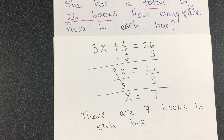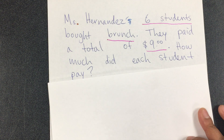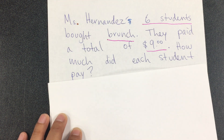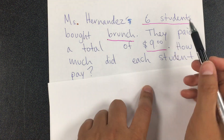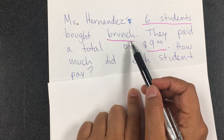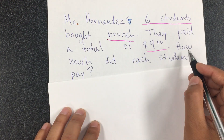Let's do another one. The next one says: Ms. Hernandez's six students bought brunch. They paid a total of nine dollars. How much did each student pay? So we underline six students and that they bought brunch — 'bought' means compraron.